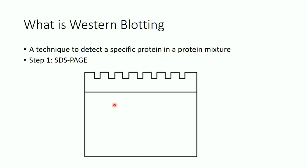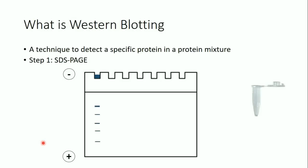Let's say this is the SDS-PAGE gel. We have the stacking gel and the separating gel. We apply the sample — our protein extract — in the wells of the gel, and then we apply an electrical current using a battery or a power source. The proteins will migrate from negative toward positive charge because they are negatively charged, and they will be separated in the gel according to their molecular weight.